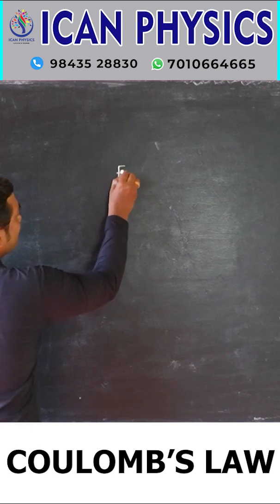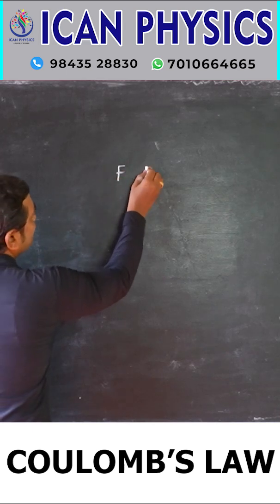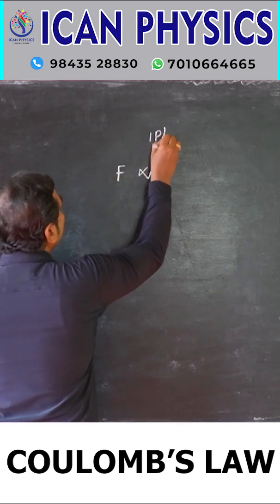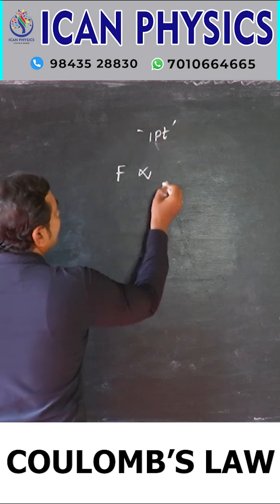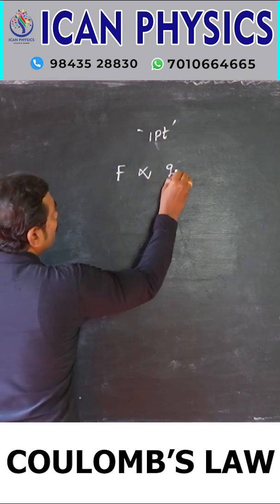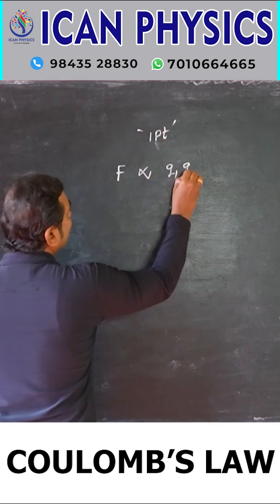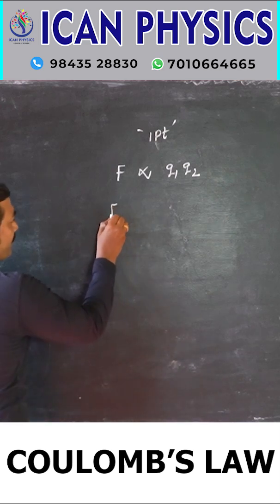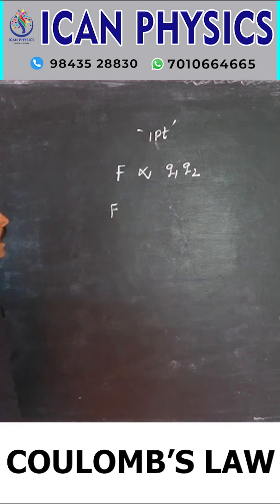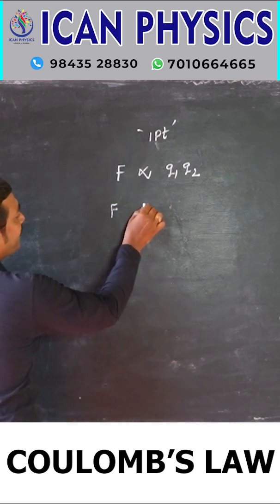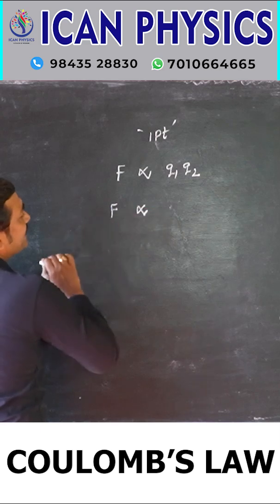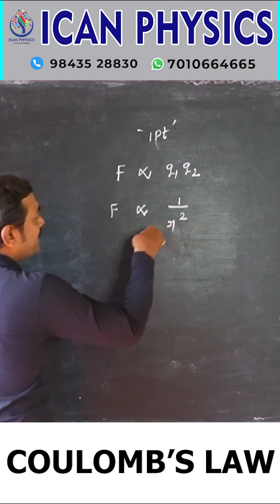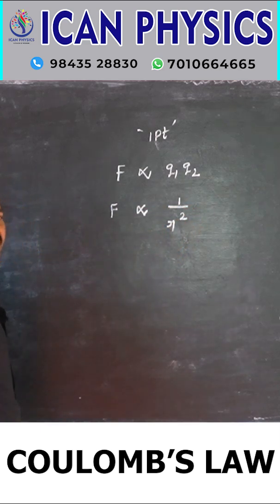The force of attraction or repulsion between two point charges is directly proportional to the product of the charges, and inversely proportional to the square of the distance between them.